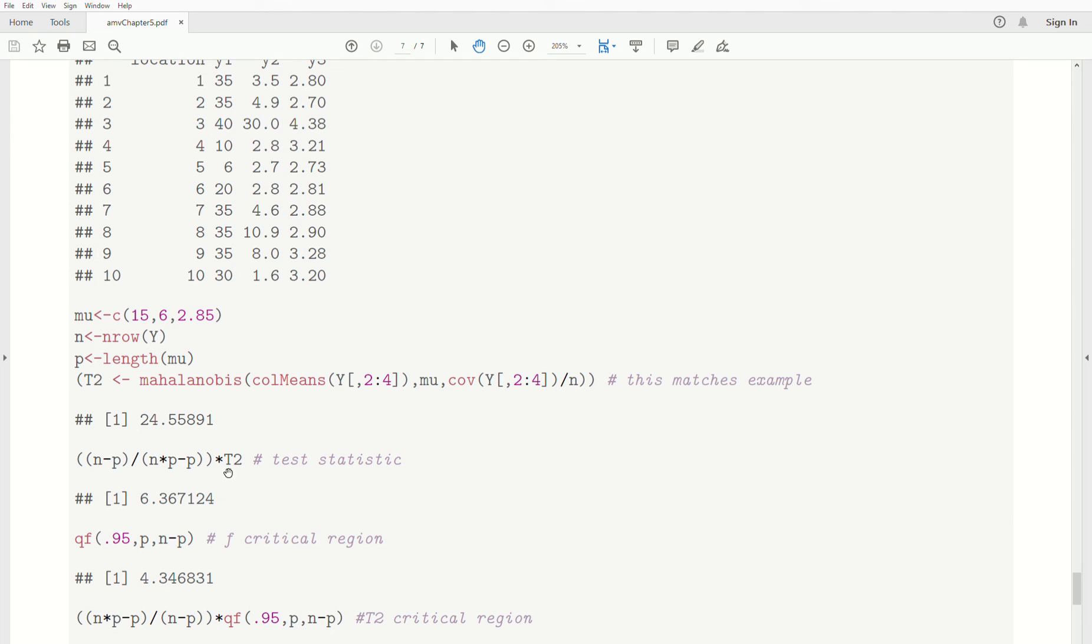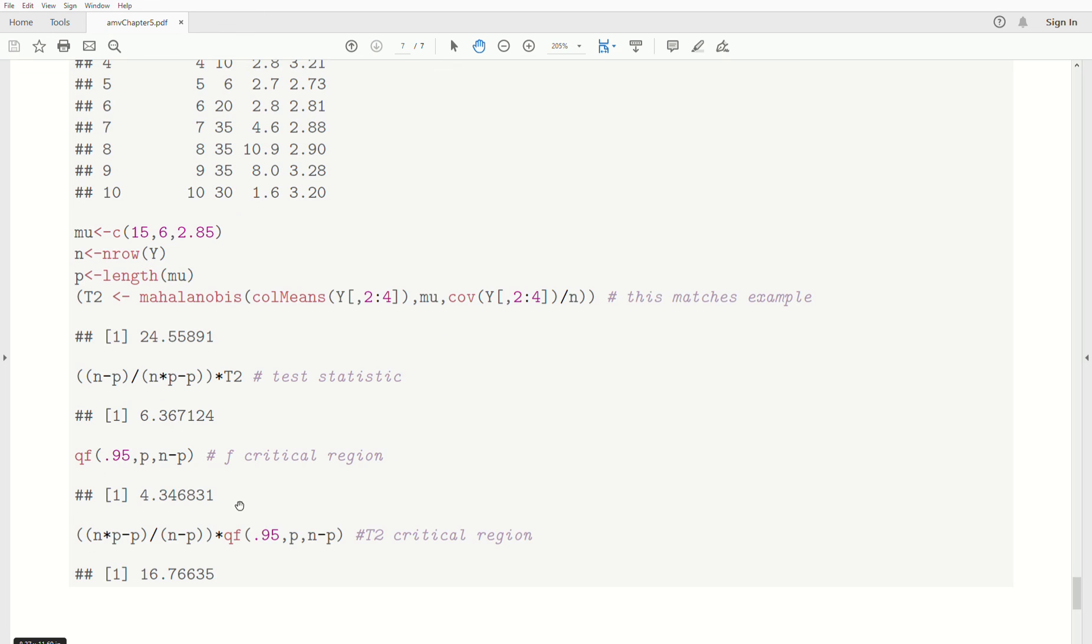The test statistic, the second test statistic is we take T squared, which is 24, times this fraction, which is 6.367, which is what we got above. The critical region in the F distribution. We want the right tail to be 0.05, but the Q function is a cumulative. So, if it's 0.05 to the right, it means 0.95 to the left. Numerator is P degrees of freedom. Denominated degrees of freedom is N minus P. And that value, that critical region is 4.34, and that's the same.